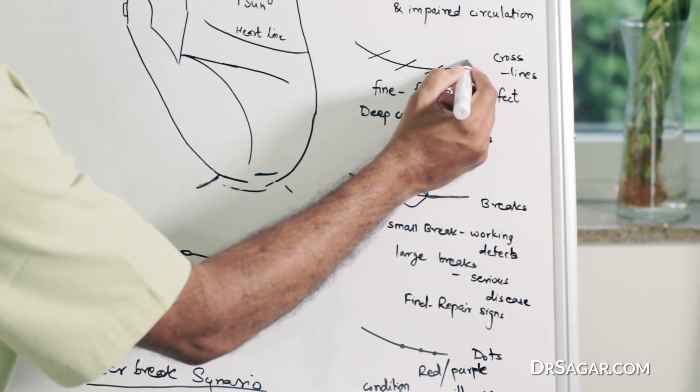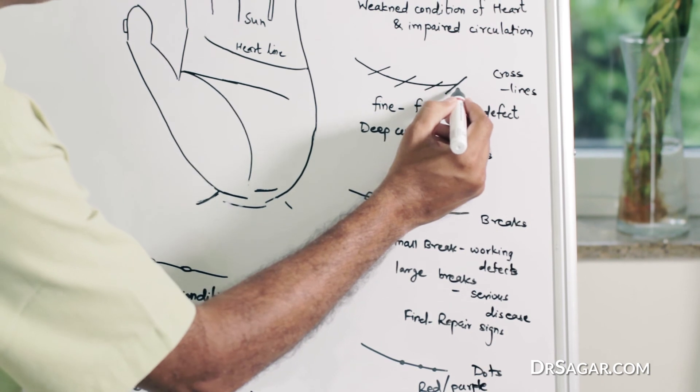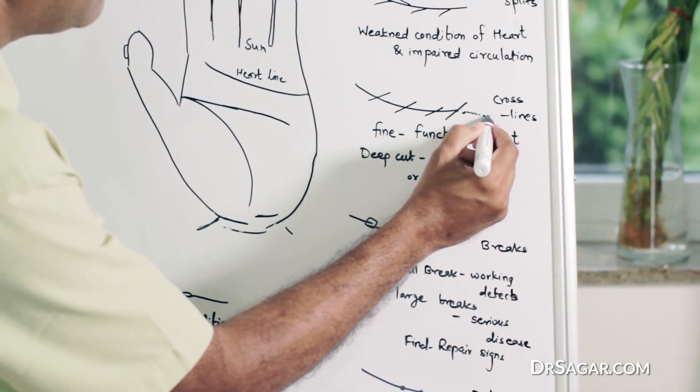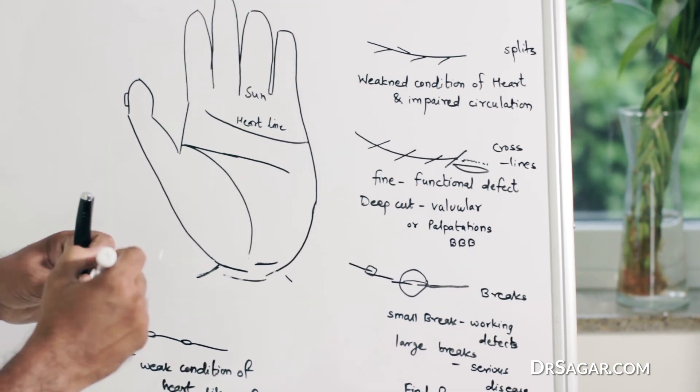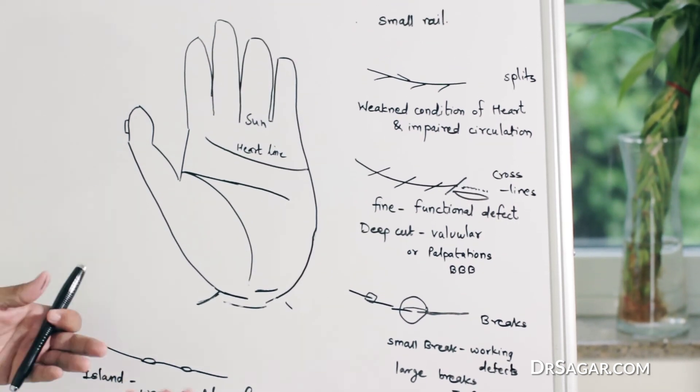But, if a cross line is there, and after that the heart line is broken, or it is not present, it is absent, then it has a serious condition of the heart.